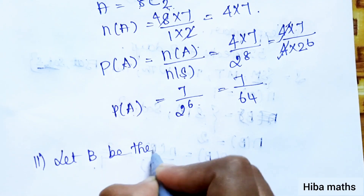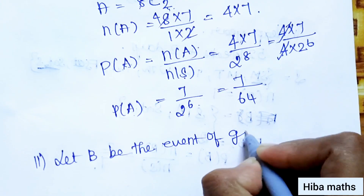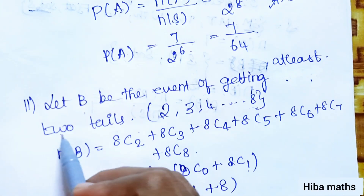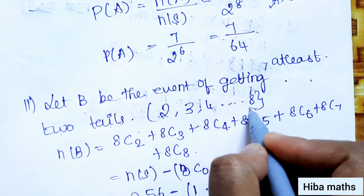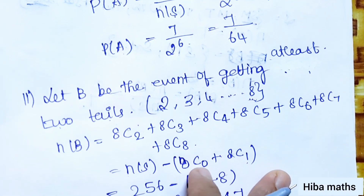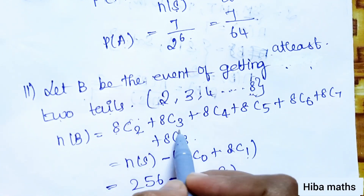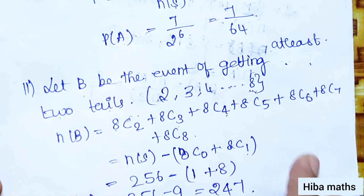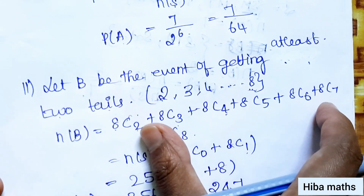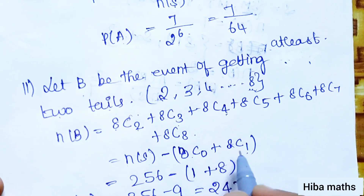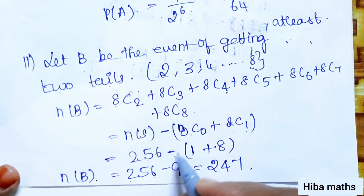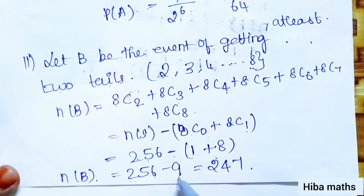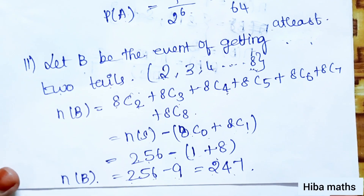Part two — at least 2 tails. Let B be the event of getting at least 2 tails. At least 2 means 2, 3, 4, 5, 6, 7, or 8 tails. So N(B) equals 8C2 plus 8C3 plus ... plus 8C8, which equals 256 minus 8C0 minus 8C1, that is 256 minus 1 minus 8 equals 247. So P(B) equals 247/256.